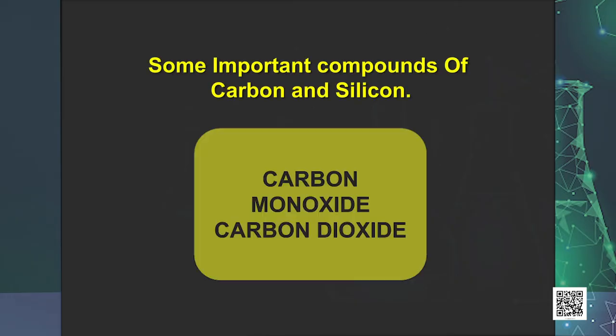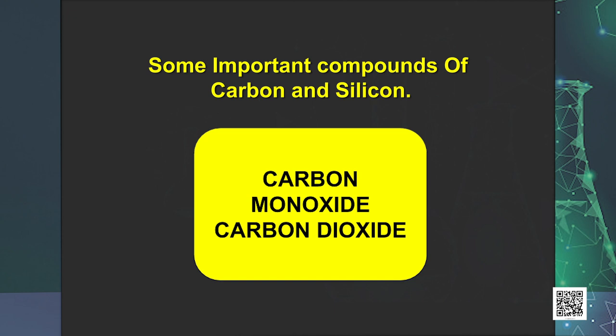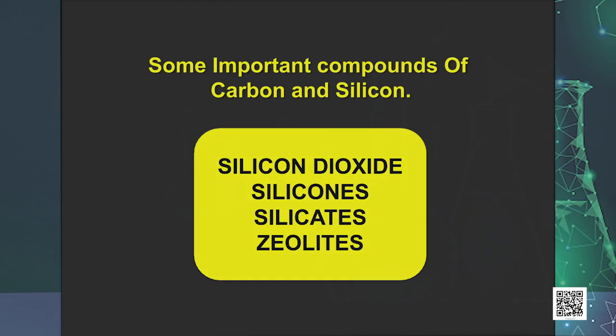Next topic we have is some important compounds of carbon and silicon. The two important oxides of carbon are carbon monoxide, which is CO, and carbon dioxide, which is CO2. For compounds of silicon we have silicon dioxide, silicones, silicates, and zeolites.